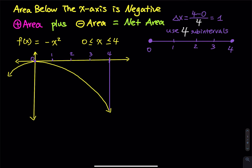When you study the area below the curve, it is important to know that the area below the x-axis is negative. One other thing is if you have a positive area plus a negative area, that equals net area. In this video I'm going to explain why, and then I will show you what net area is.